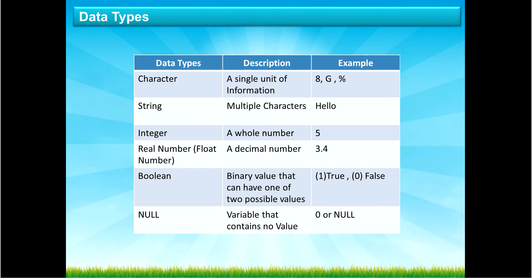There are lots of different data types and a lot of people get some of them confused, so I'm going to try and cover those mistakes. The first one is character. A character is a single unit of information — basically a single character. An example would be the number eight on its own, or the number one. An alphabetical character such as the letter G on its own is also a single character. Don't forget symbols — the percentage sign or the at sign on its own would be exactly the same.